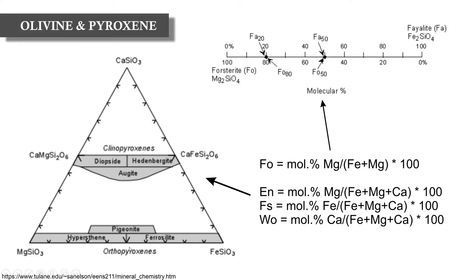For pyroxenes, we add a third end member — calcium — in addition to the magnesium-iron solid solution. The three end members are enstatite (Mg-rich), wollastonite (Ca-rich), and ferrosilite (Fe-rich), with a clinopyroxene solid solution in the middle. The calculation operates the same as for forsterite, with calcium also included, and analysed minerals plot within a ternary diagram to determine the pyroxene type. Note that there are gaps where no naturally occurring phases exist in nature.